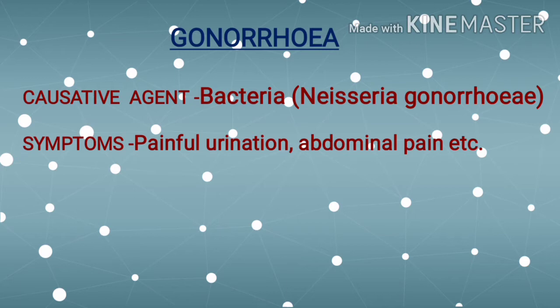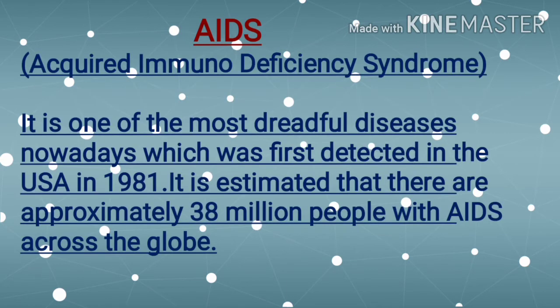Gonorrhea is another example of a common sexually transmitted disease. It is caused by the bacteria Neisseria gonorrhea, and symptoms include painful urination, abdominal pain, etc. The next common sexually transmitted disease is AIDS.